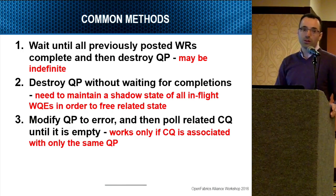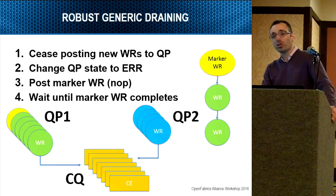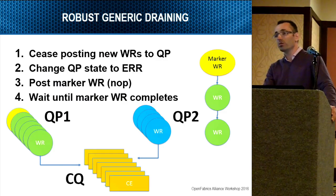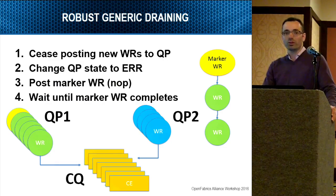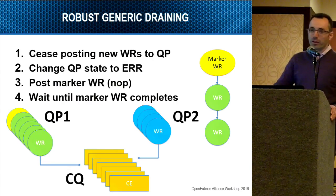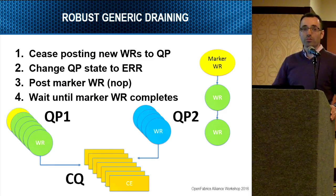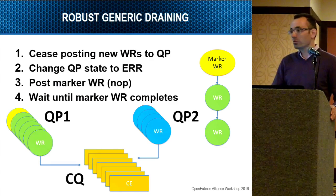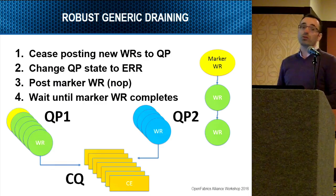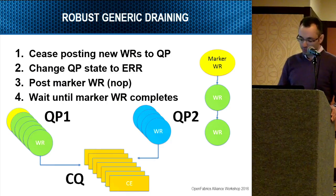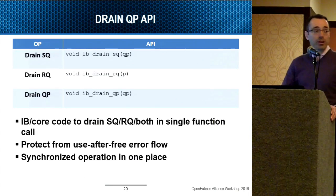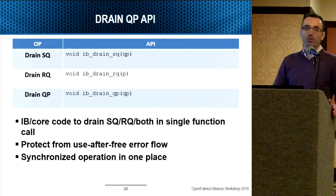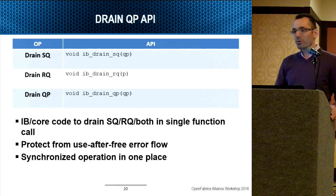The fourth solution: change the QP to error state, post a marker which does nothing onto the draining QP, then wait until this marker is received from polling the CQ. This helps us identify that the QP is totally empty, without any relation to other QPs that may be connected. We also simplified the interface — there are now only three functions: drain SQ, drain RQ, and drain QP, which calls drain SQ and drain RQ one after another.